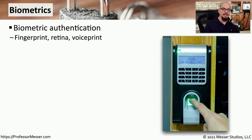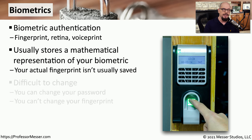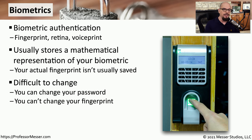If you've ever gained access to a room through a locked door using a fingerprint or a handprint, then you are using biometrics. Biometrics can also be used for retinas and voice prints, or anything that might be associated with an individual. This usually stores a mathematical representation of something you are — for example, it might store a mathematical representation of your fingerprint and not the actual picture of your fingerprint. Your fingerprint is something that is very difficult to change and very difficult for someone else to duplicate, meaning that particular mathematical representation could only be associated with you.